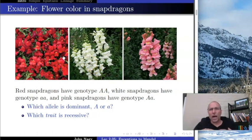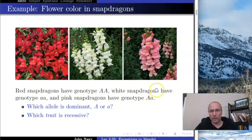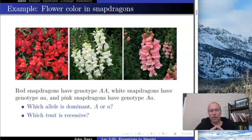We need to fall back on the technical definition of dominance: if a trait is fully expressed in the heterozygote, that trait is dominant, and the allele that causes that trait is dominant. The big A allele causes red — but the heterozygote is not red, so big A cannot be dominant. White is caused by little a — but the heterozygote is not white, so little a cannot be dominant. If neither allele is dominant, then neither homozygote phenotype is dominant: red is not dominant and white is not dominant.